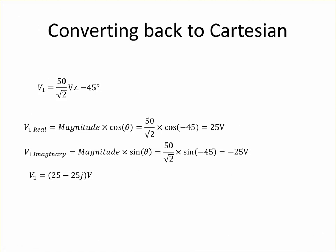Just as a refresher, if you need to convert back to Cartesian, the real part is the magnitude times the cosine, and in this case is 25 volts. And the imaginary part is the magnitude times the sine, which is minus 25 volts, which makes sense because at an angle of minus 45, you're in quadrant four. The complete way to describe V1 is 25 minus 25j.